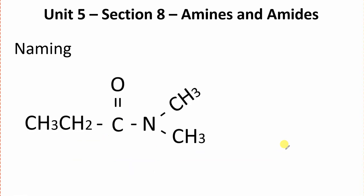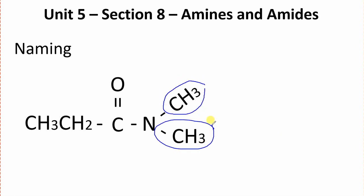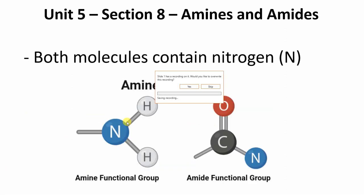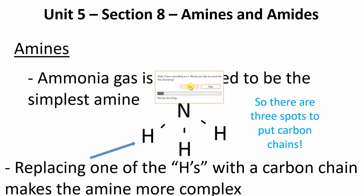And this is a nice complex one here. We've got a couple of methyl groups, so this one we'll start off by calling dimethyl. And now here we have three carbons, so this one's going to be dimethyl propanamide.